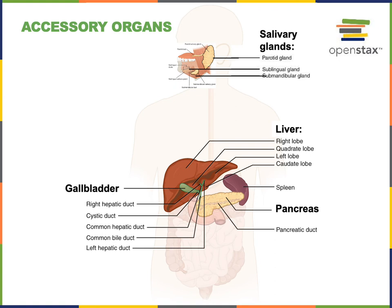The function of the gallbladder is to store and concentrate bile. When the liver secretes bile into bile ducts, those ducts carry the bile into the gallbladder, which stores the bile until it needs to be released. When a large amount of food enters into the duodenum, the liver and gallbladder secrete bile into the duodenum, where it enables the emulsification of lipid-soluble nutrients, facilitating their digestion and absorption.